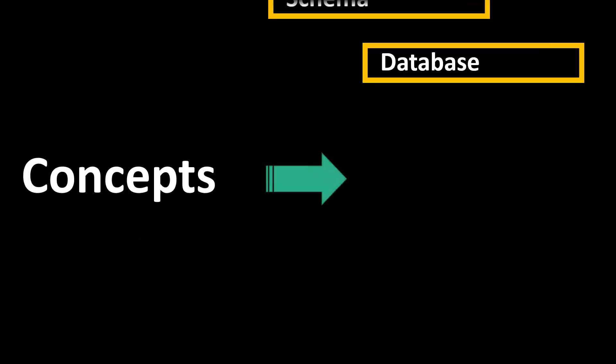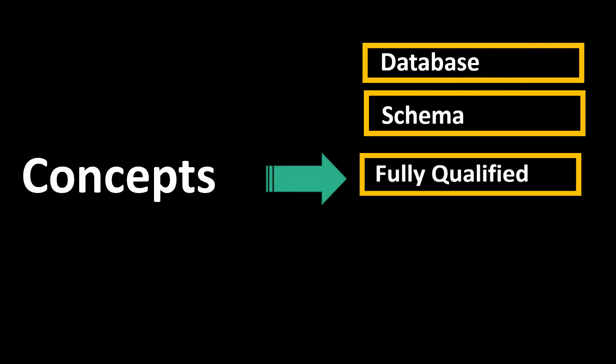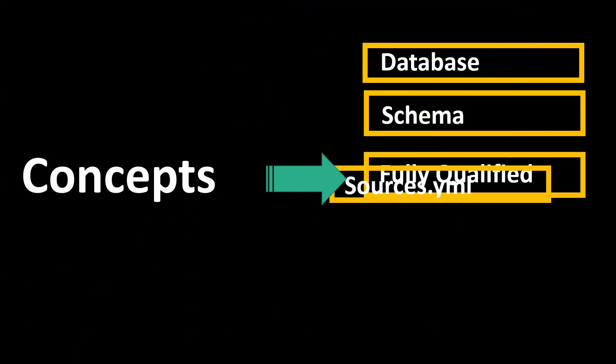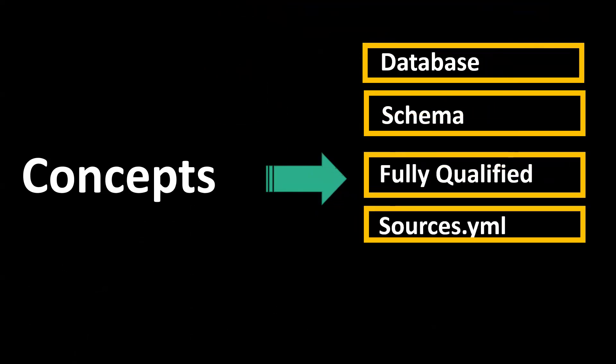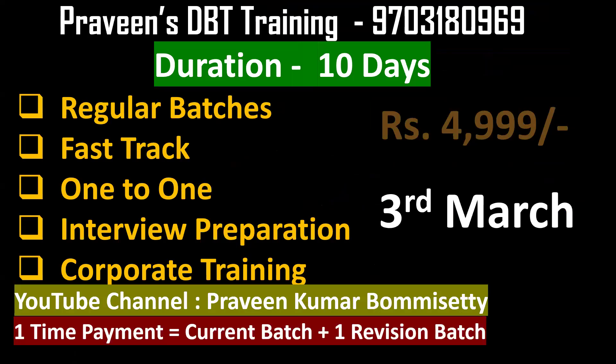Before that, you should have a better understanding of what is a database, schema, and fully qualified name. If you are able to understand, a fully qualified name is nothing but the database name, the schema name, and the object name. You should also understand YAML files: sources.yml and packages.yml. If you understand this concept, it will be simple and easy.